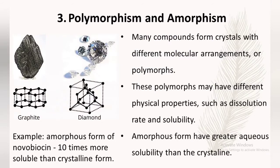The next factor is polymorphism and amorphism. Many compounds form crystals with different molecular arrangements called polymorphs, which may have different physical properties such as dissolution rate and solubility. As seen in the picture, polymorphs of carbon include graphite, charcoal, and diamond — all made up of carbon but with different physical properties; diamond is the hardest whereas graphite is soft.